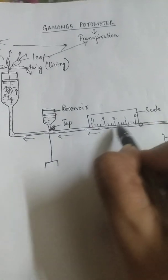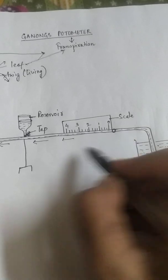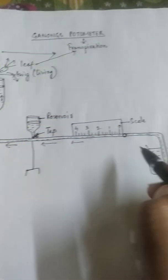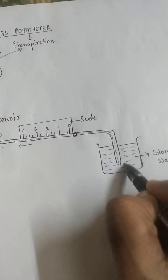So there will be a flow of water towards this twig. And where will and how will the water flow? Definitely the water will be sucked from the beaker containing the colored water.